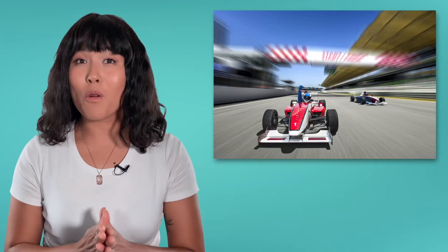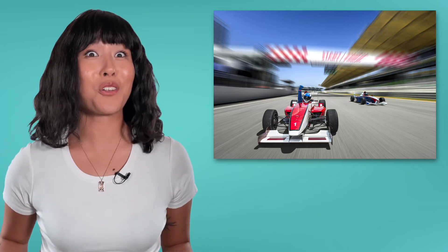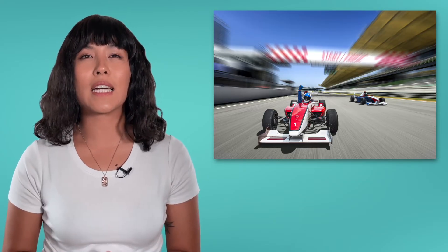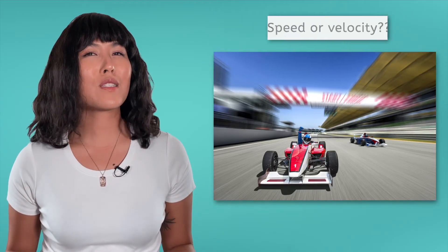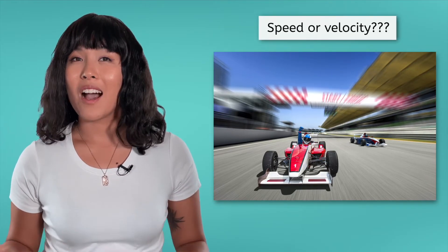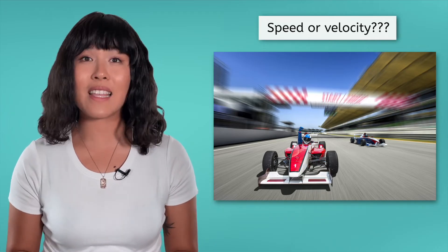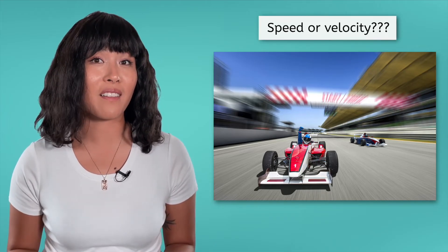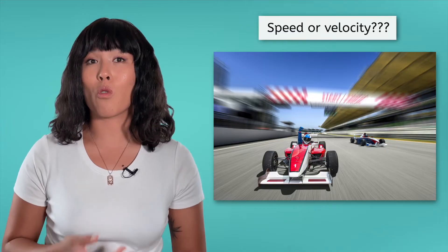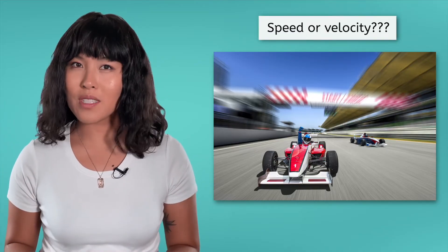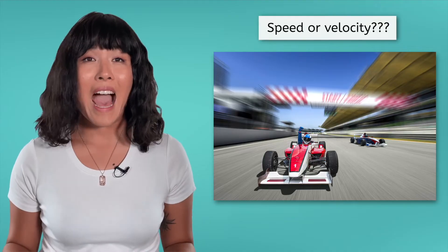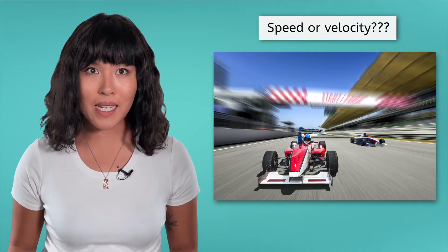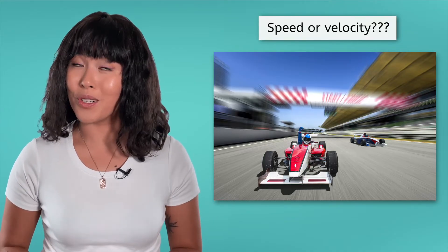Did you know that a Formula One race car can reach speeds of over 200 miles per hour? I'm pretty sure most of us would get a speeding ticket if we tried to match that. But what does speed have to do with velocity? A commonly held misconception is that they really mean the same thing, velocity simply being the more scientific term. But it turns out that speed and velocity actually have slightly different meanings, and both are useful in science.